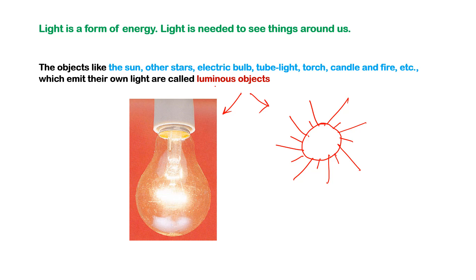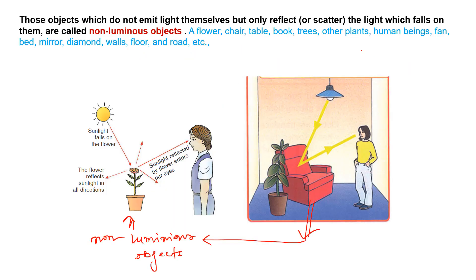There is a classification of objects into luminous objects and non-luminous objects. Luminous objects have their own light source — examples include the sun, stars, electric bulb, tube light, torch, candle, and fire. Non-luminous objects don't have their own light; they are only visible when light rays fall on them.